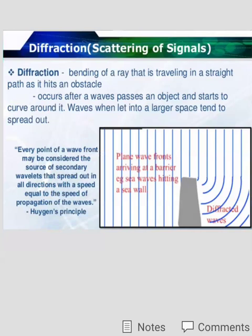Another property is diffraction. It is called as scattering of the signal. Diffraction or scattering means bending of the radio waves that is traveling in straight path as it hits an obstacle as shown in above figure.